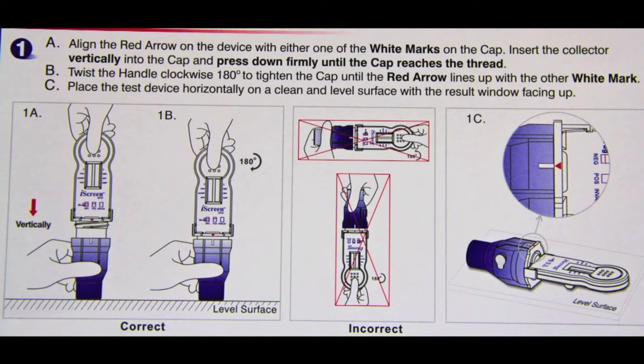Insert the collector vertically into the cap and press down firmly until the cap reaches the thread. Twist the handle clockwise 180 degrees to tighten the cap until the red arrow lines up with the other white mark. Place the test horizontally on a clean and level surface with the result window facing up.